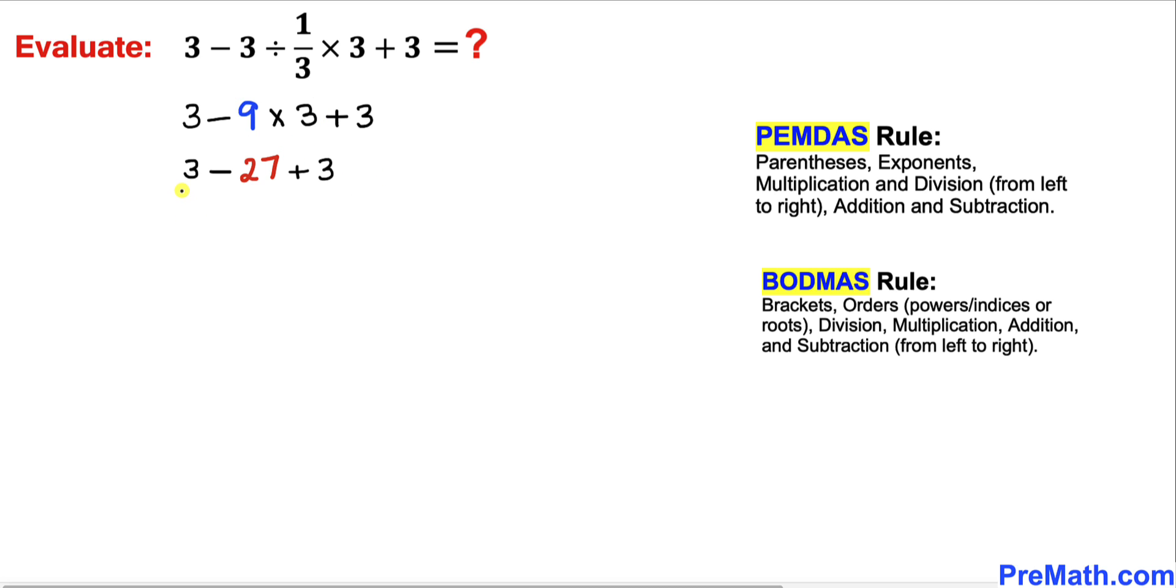Now let's take care of this 3 minus 27. That is going to give us negative 24, and I'm going to bring down plus 3 over here.